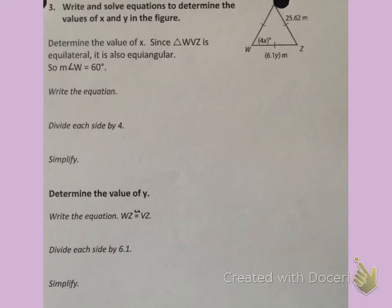Because we know this to be true about equilateral triangles, we can write and solve equations to find missing values. Write and solve equations to determine the values of X and Y in the figure. First let's start with the value of X. Looking at the picture, I see X is in one of the corners, which means it's a measure of an angle.